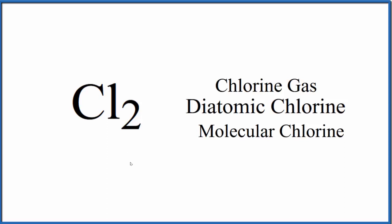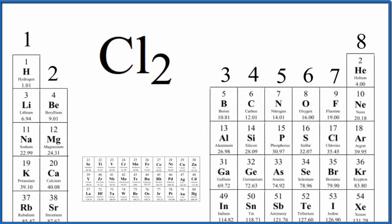The first thing we need to do to write the Lewis structure for Cl₂ is count the valence electrons. We have the periodic table and each group has the number of valence electrons written above it. Group one has one valence electron. All the elements in group two have two.